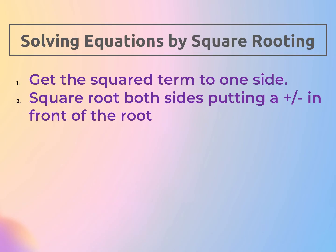The next technique is solving equations by square rooting. Your first step is always to get the square term isolated on one side. Then square root both sides and put a plus and minus in front of the root. Unlike in geometry where we only kept the positive answer, here we always include both the positive and the negative answer.